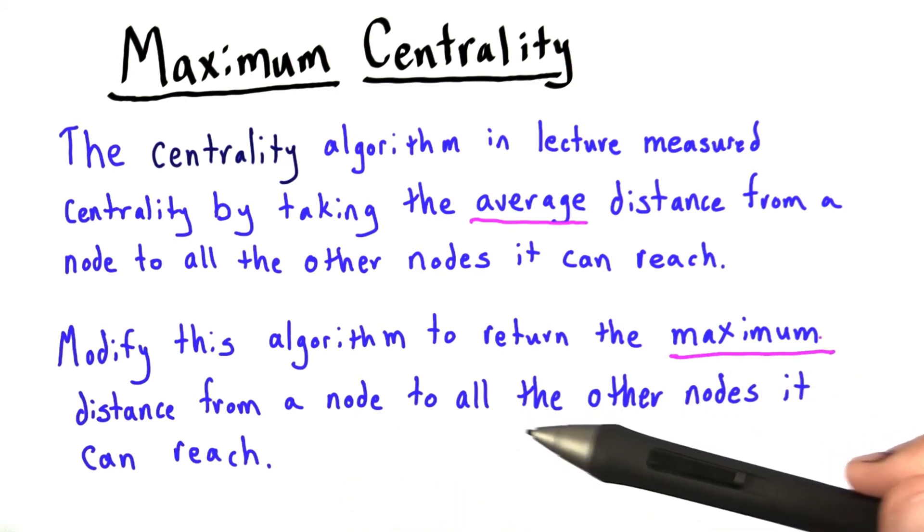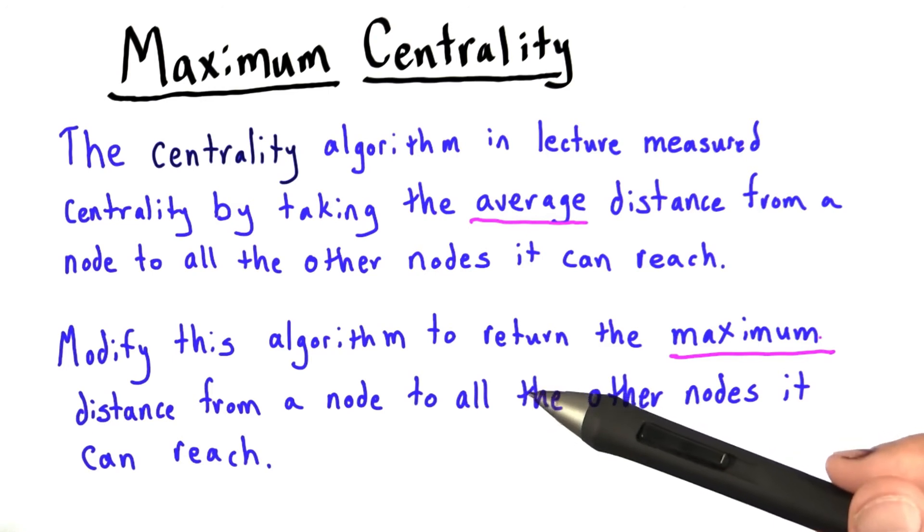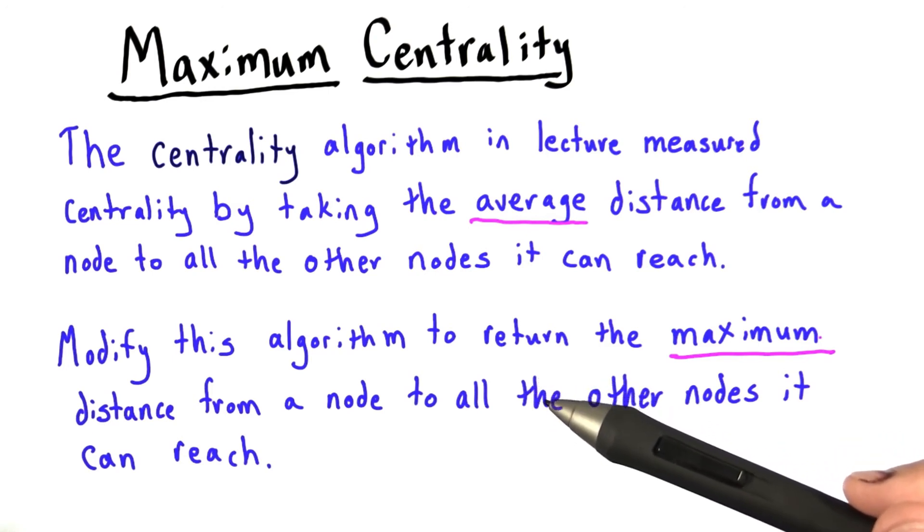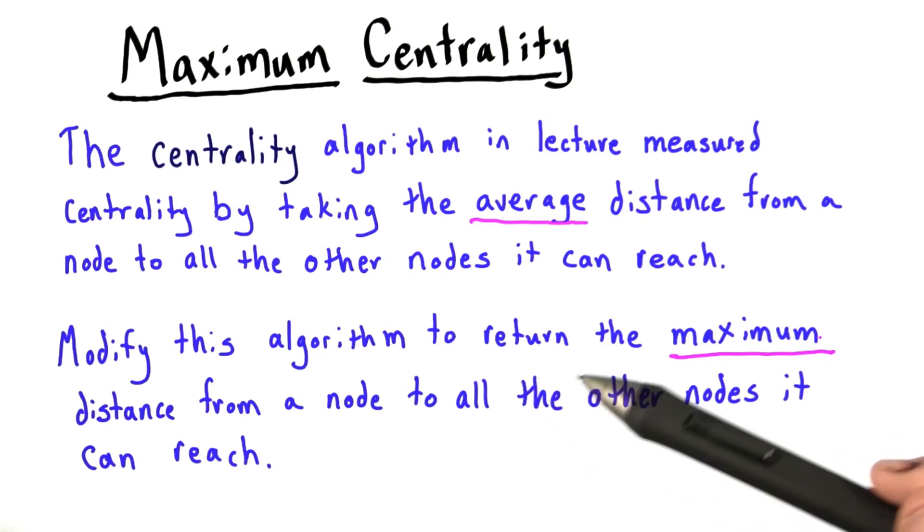This algorithm captures a different notion of centrality. A node is central if no other node is very far away from it.